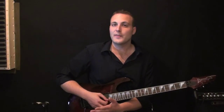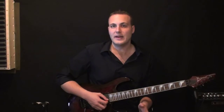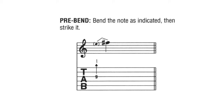Before we dive into all of that, we're going to have a look at some diagrams and talk about the pre-bend and how it's different from a normal bend. As you can see in this diagram, the description at the top says 'pre-bend' and it says bend the note as indicated then strike it. The difference between the bend we're going to do today and a regular bend is that we bend the string before we pick it with the plectrum. Looking at the tab, we want to fret the note on fret 9 of the G string, and the arrow going straight up means to pre-bend — bend the string and then strike it.